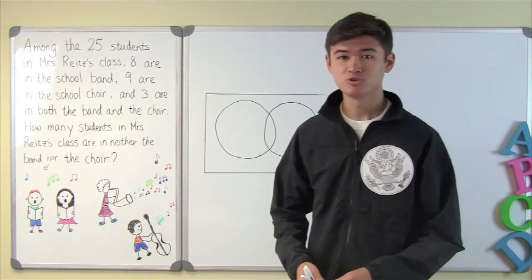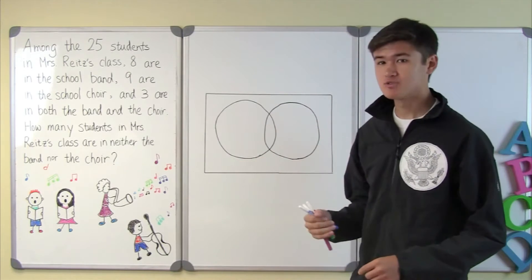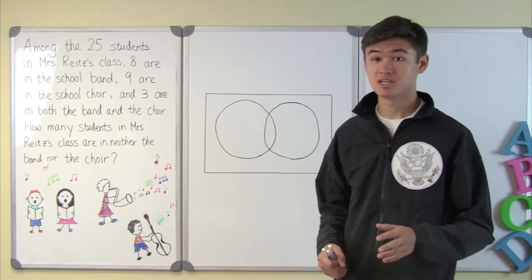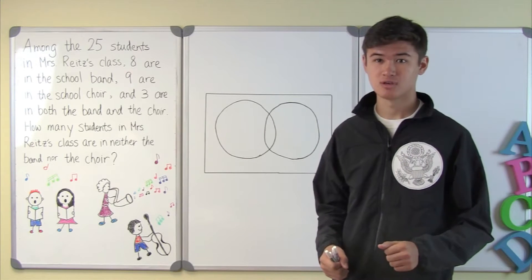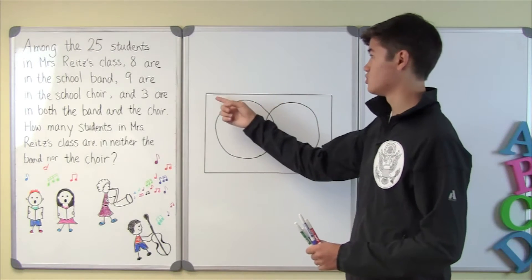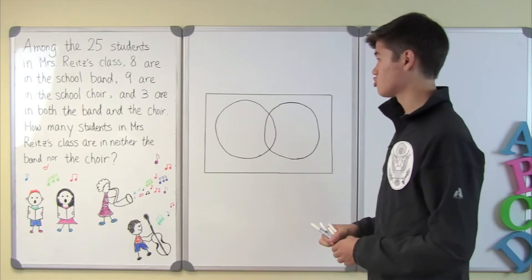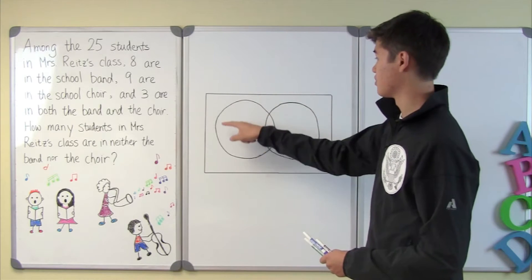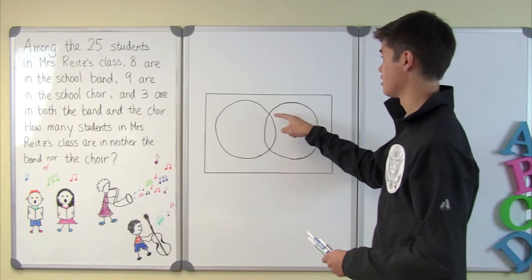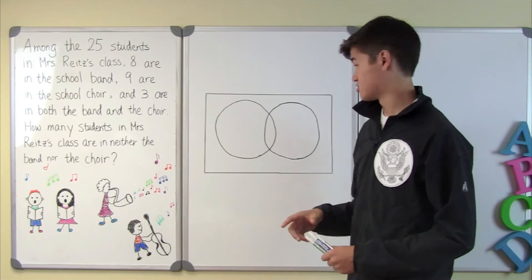In order to solve this problem we will use a Venn diagram to represent the situation. Venn diagrams are very useful tools to represent relationships among groups of objects, especially groups with shared members. To represent this situation, first we can draw a rectangle to represent all of the students in Mrs. Reitz's class, then a circle for band and a circle for choir. Since the two groups have shared members, the two circles intersect.